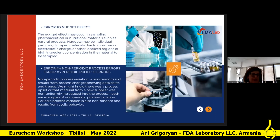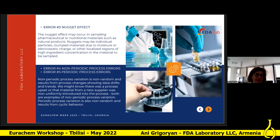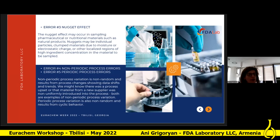The second group is process errors, which includes non-periodical and periodical parts. Non-periodical process variation is non-random and results from process changes, showing data shifts and trends. We might see this when a process upset occurs or when materials from new suppliers are introduced into the process. Both are examples of non-periodical process variation.